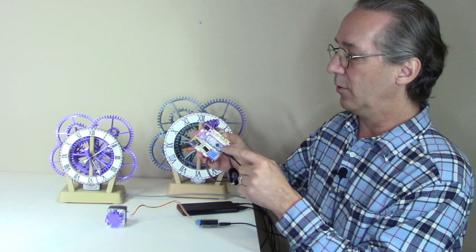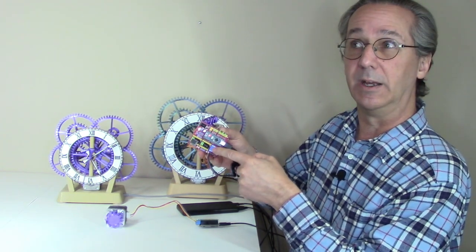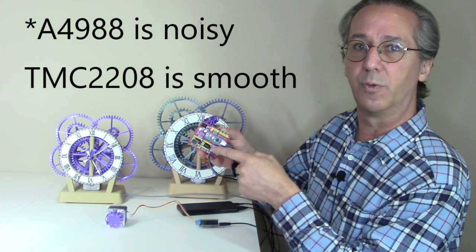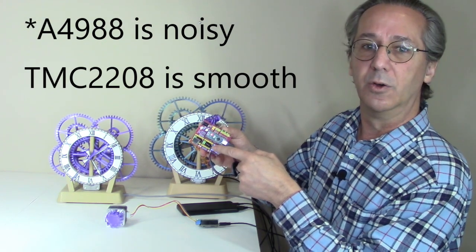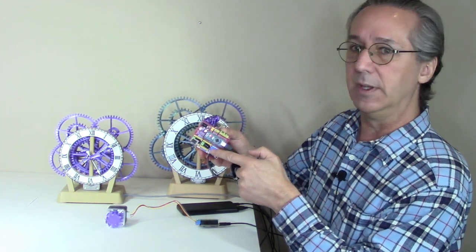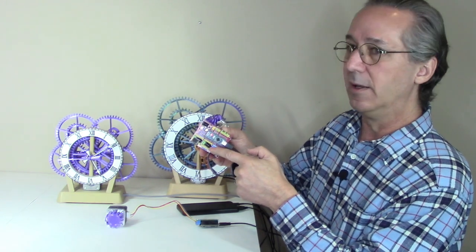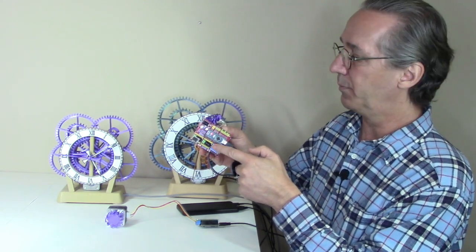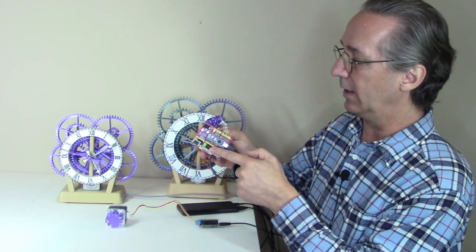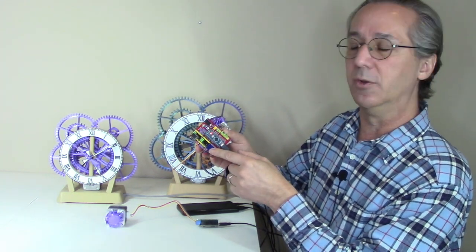The real secret to making this work is replacing the A4998 with a TMC2208. These 2208s have a lot of advantages. For one, they are super smooth. The second thing is they can be configured to run using five volts.